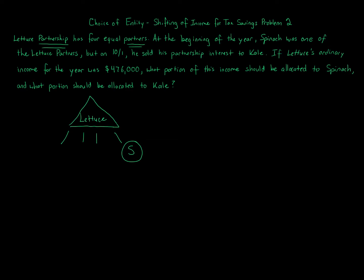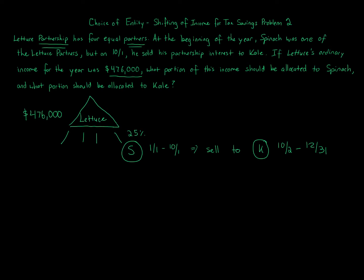Spinach owns his 25% interest from January 1st until October 1st, then sells to Kale. Kale then owns that same 25% from October 2nd through December 31st. If Lettuce has $476,000 of ordinary income to allocate for the year, the question is: what portion goes to Spinach and what portion goes to Kale?